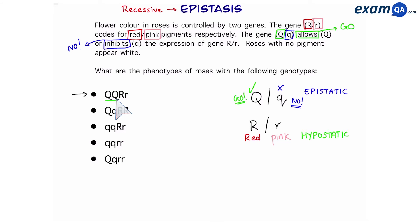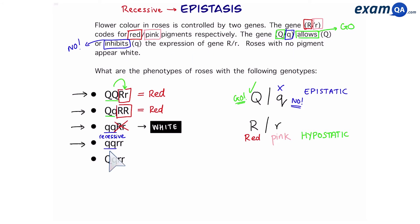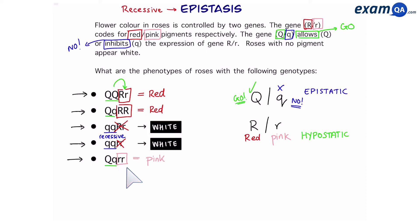Working through the genotypes: first genotype — epistatic gene overall dominant, so go to the next gene, which is overall dominant — red. Second example — epistatic gene dominant overall, next gene dominant — red again. Next one — epistatic gene overall recessive, so the next gene will not be expressed — white, as roses with no pigment appear white. Next — overall recessive again, so white. Finally — overall dominant, go to next gene, which has two small r's — pink.